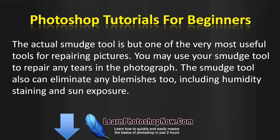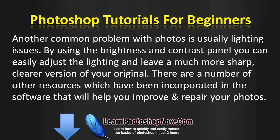The smudge tool is one of the most useful tools for repairing pictures. You may use the smudge tool to repair any tears in the photograph, and it can also eliminate any blemishes too, including humidity, staining, and sun exposure. Another common problem with photos is lighting issues. By using the brightness and contrast panel, you can easily adjust the lighting and leave a much more sharp, clearer version of your original.